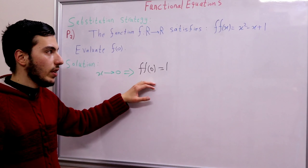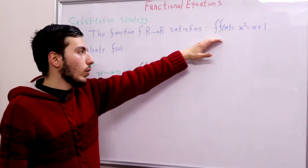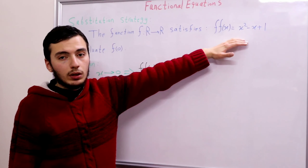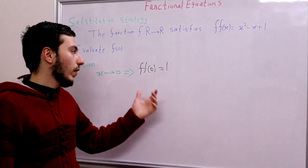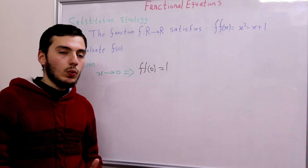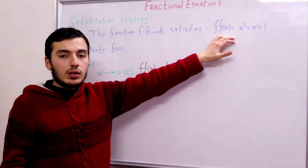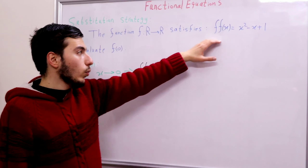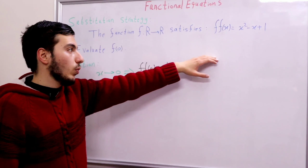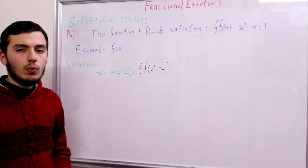We can evaluate the value of f(f(1)). So f(f(1)) = 1 - 1 + 1, which is 1. So we can evaluate the value of f(f(1)). But if we keep substituting small numbers like 0, 1, 2, 4, we will always get the value of f(f(·)) but we can never evaluate the value of f(0). So what can we do?